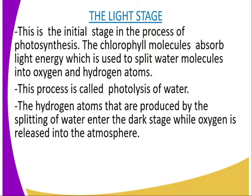The hydrogen atoms produced by the splitting of water enter the dark stage, while oxygen is released into the atmosphere or used by the plant for processes like respiration. Some of the solar energy absorbed by the chlorophyll molecules is used in the formation of energy-rich ATP, which stands for adenosine triphosphate. This ATP is later used in the dark stage.